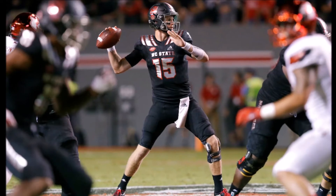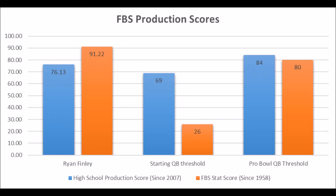Starting out with Ryan Finley in terms of his high school production score and FBS production score: he had a 76.13 high school production score, which hits above the starting quarterback threshold of 69 or higher. It doesn't quite hit the Pro Bowl quarterback threshold of 84 or higher, but it's definitely pretty decent. The high school production score gives a general idea of development coming out of high school, and in many ways tells you the prodigy potential of a player.